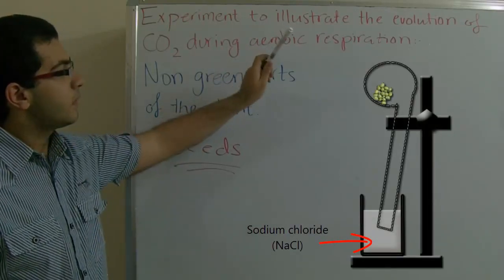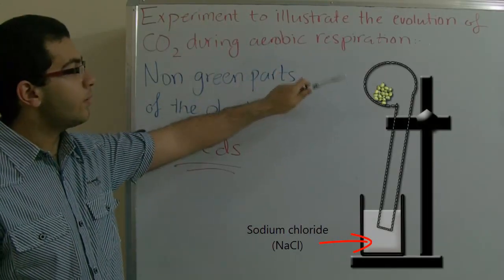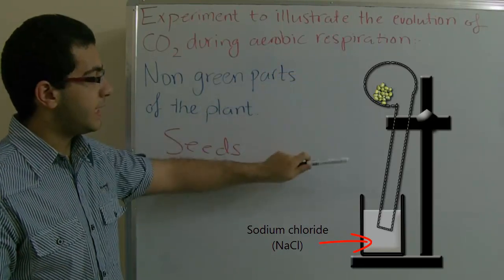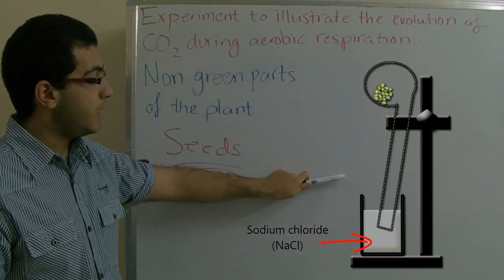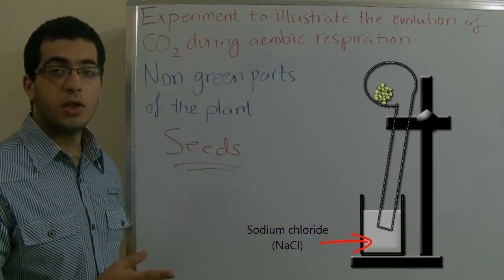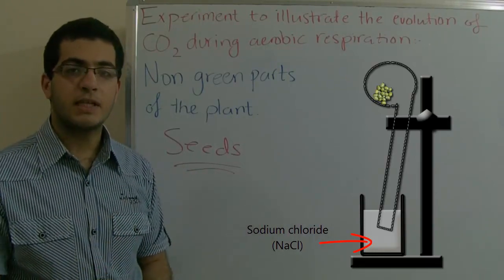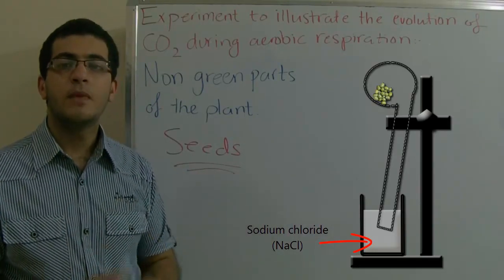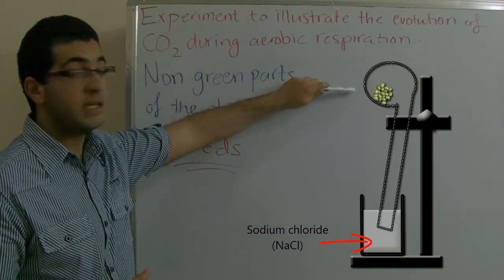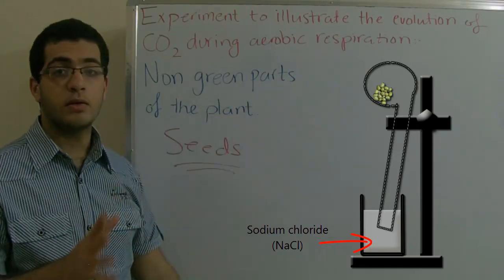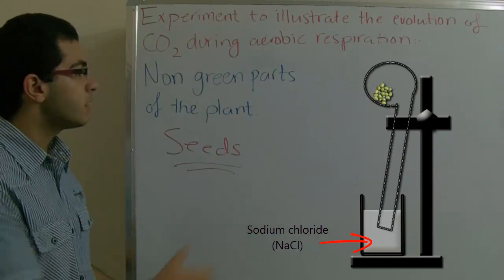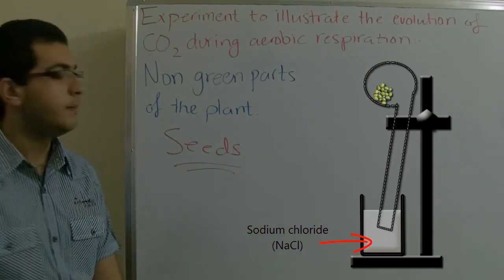The second one also has a retort with its neck dipped in a beaker. This beaker contains sodium chloride instead of potassium hydroxide. And here we have seeds, but these are germinating seeds — not dry seeds — so these seeds are actually growing.